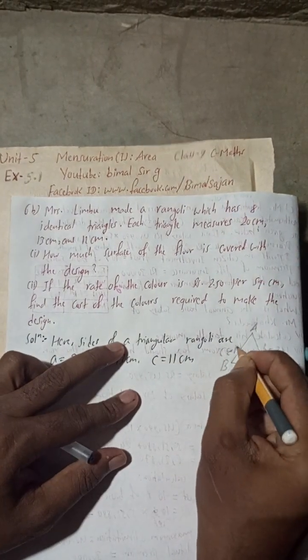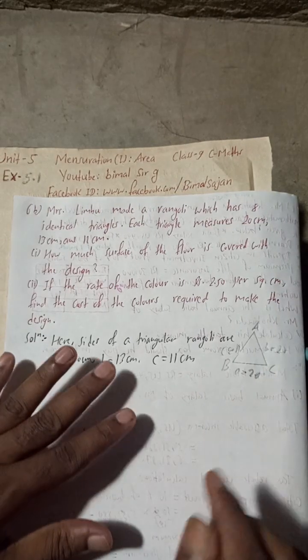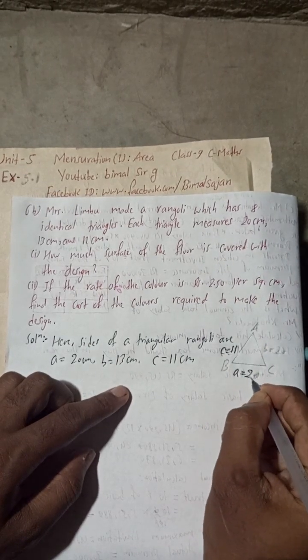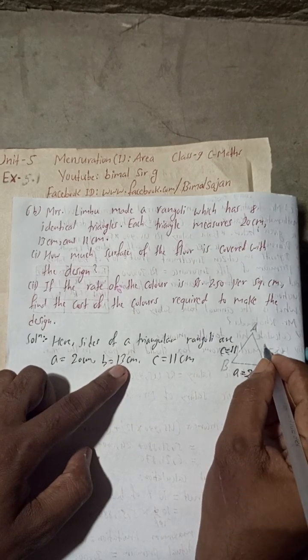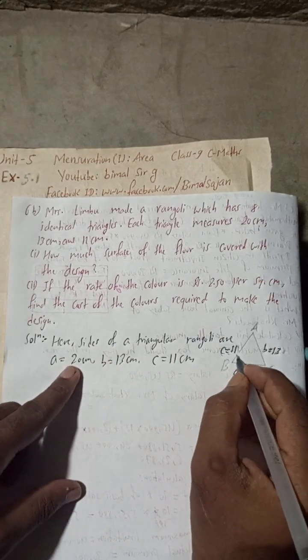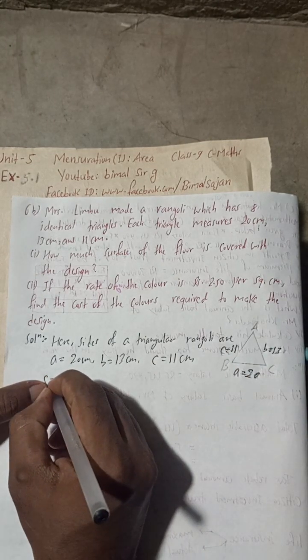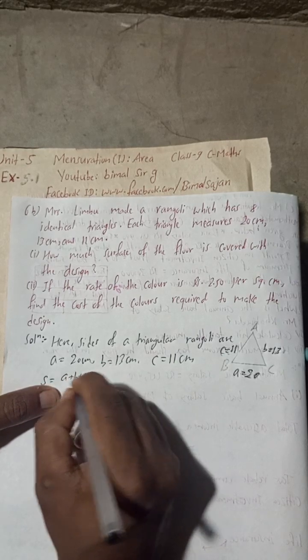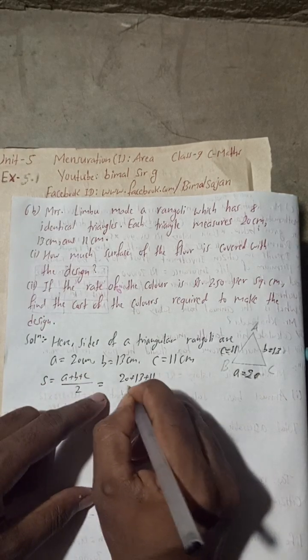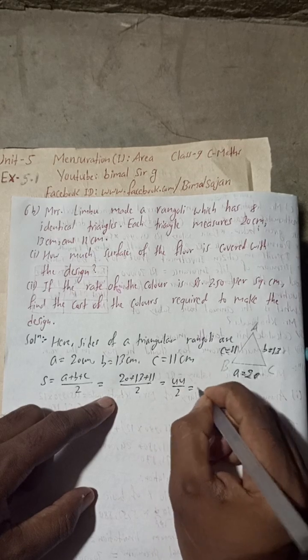From this figure, we can say that semi-perimeter s = (a + b + c)/2. So s = (20 + 13 + 11)/2 = 44/2 = 22 cm.